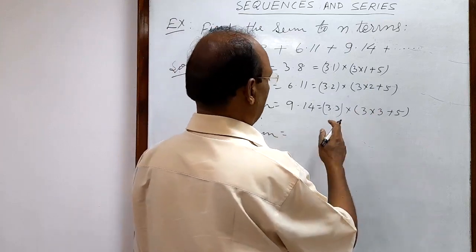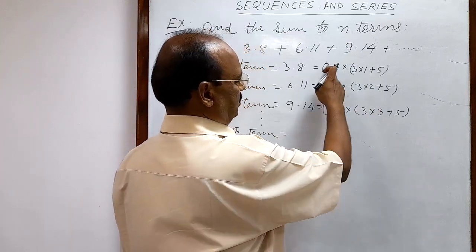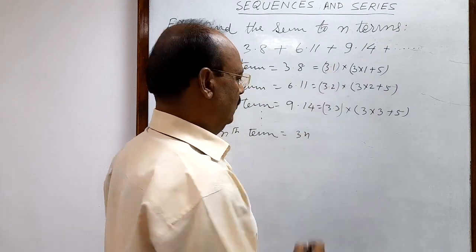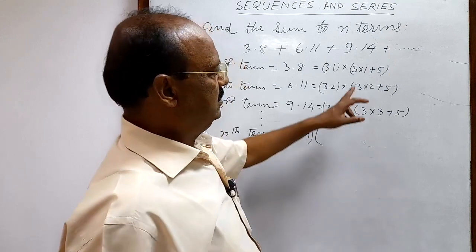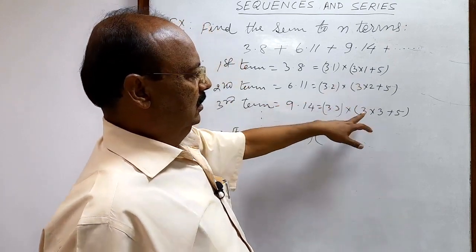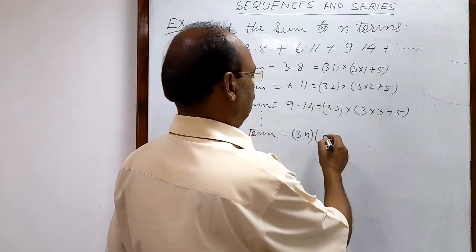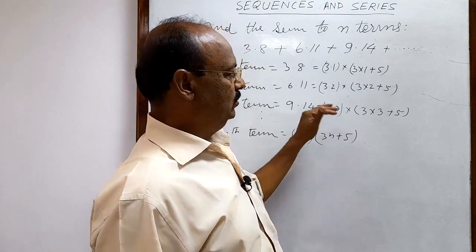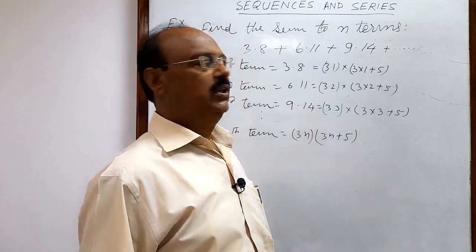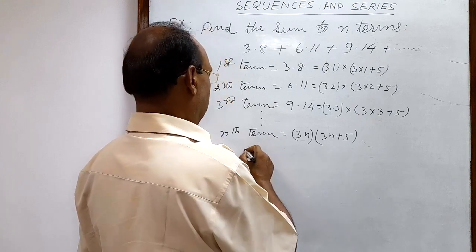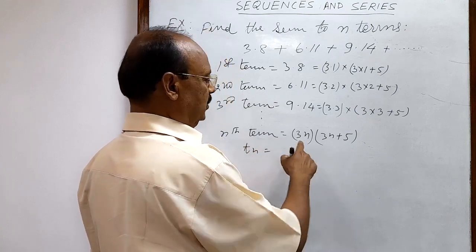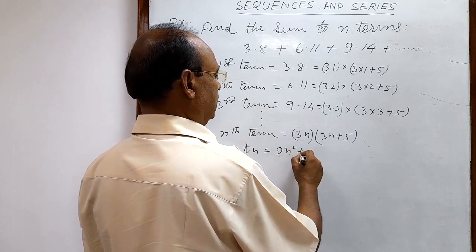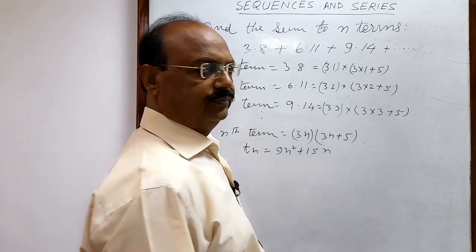Similarly, for the nth term the first factor is 3n and the second factor is 3n + 5. Therefore, t_n = 3n × (3n + 5), which expands to 9n² + 15n.